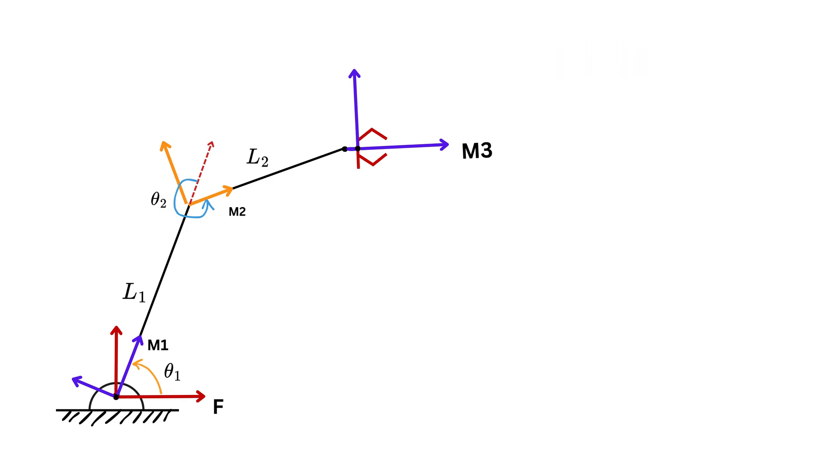Now, x-axis of M2 will be this line. So theta three rotation for the end effector frame M3 will be like this.